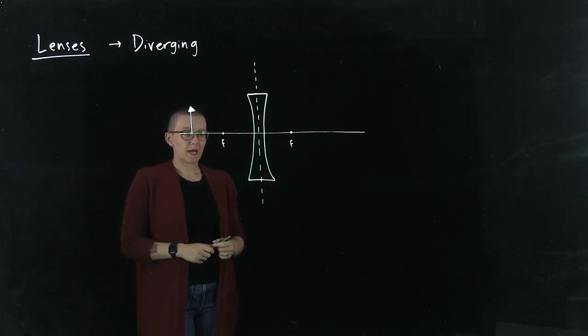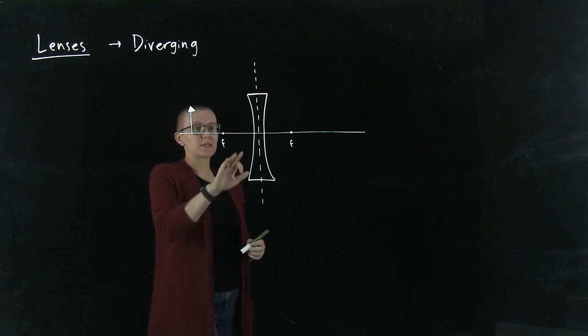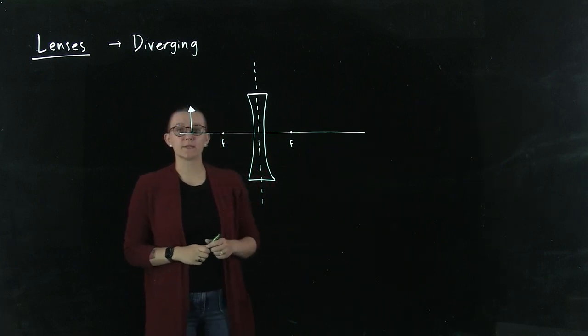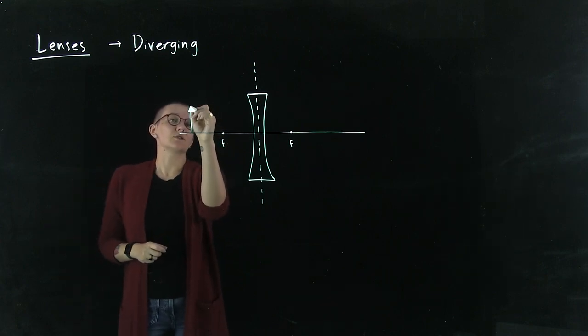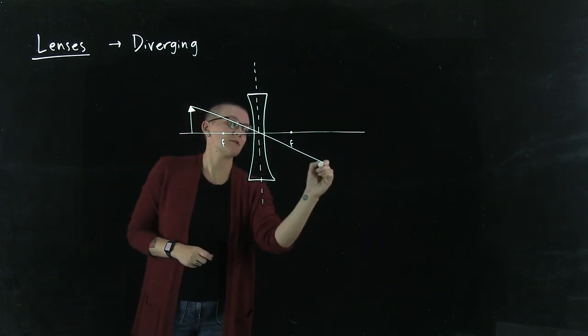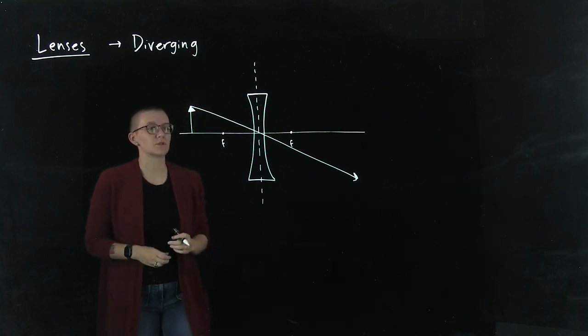Our first ray is maybe the simplest. We're going to draw just straight through the lens, just like we did previously with the converging lens. We can draw straight through the center of the lens right there, and that will just continue on.